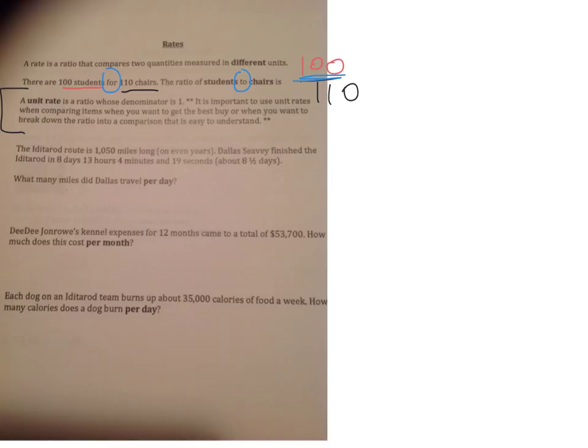So here's another Iditarod example. The Iditarod route is 1,050 miles long on even years. Dallas Seavey finished the Iditarod in 8 days, 13 hours, 4 minutes, 19 seconds. So about 8.5 days. So we want to find out how many miles did he travel per day. Per, in the case here, is that fraction. So if it took him about 8.5 days, so we're going to put 8.5 on the bottom, and it was 1,050 on the top.